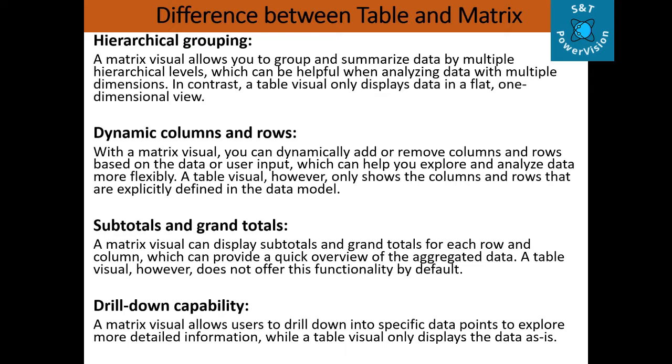Another difference is dynamic columns and rows. With a matrix visual, you can dynamically add or remove columns and rows based on the data or user input, which can help you explore and analyze data more flexibly. A table visual, however, only shows the columns and rows that are explicitly defined in the data model.